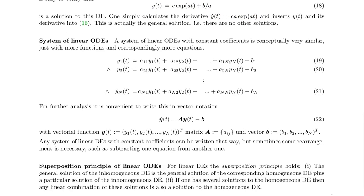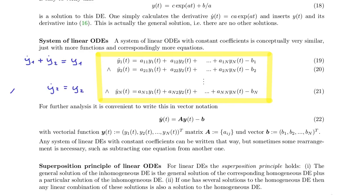A system of linear ODEs is conceptually very similar, just with more functions and more equations. A canonical form would look like this, rearranged so that each equation has just one derivative in it and each function appears once, since it is a linear differential equation. It can always be rearranged that way. Typically you have as many equations as you have functions. This is a standard form, but maybe not the initial form — your differential equation might first come in a different way.